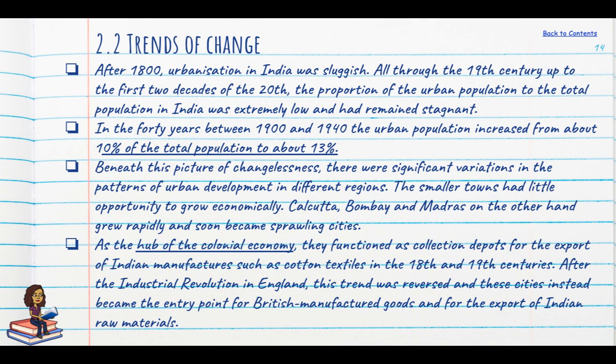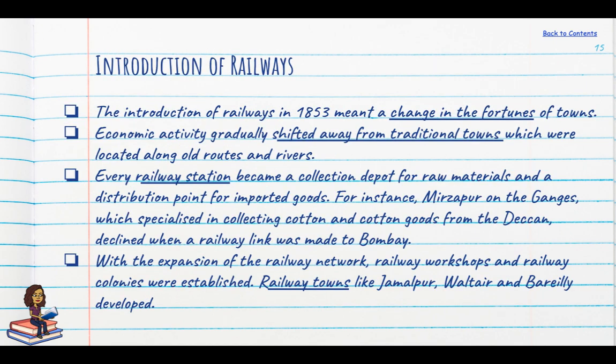As hubs of the colonial economy, Calcutta, Bombay and Madras became collection points for the export of Indian manufactures such as cotton textiles. Once the Industrial Revolution was in place, this process reversed — finished cotton goods came here to be redistributed within India, and these ports became the exit points for Indian raw materials exported to Britain. Introduction of railways in 1853 also played a big role and sounded a death knell for Surat completely.